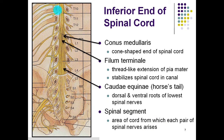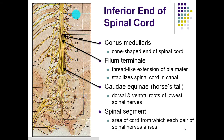Each area of the spinal cord is known as a spinal segment — that's the area of the spinal cord where its spinal nerves arise. For example, at T10 we have this segment of vertebrae and the branches of the spinal nerves coming off, and we call that a spinal segment.